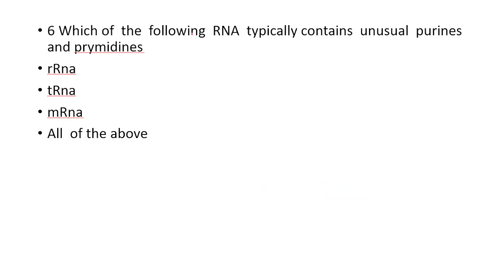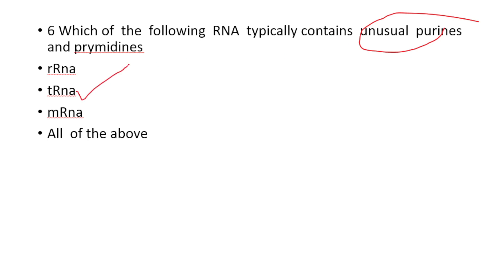Which of the following RNA typically contains unusual purines and pyrimidines? Option A: ribosomal RNA. Option B: transfer RNA. Option C: messenger RNA. Option D: all of the above. The answer is Option B — transfer RNA, or tRNA.